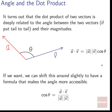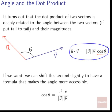If we want, we can rearrange this to make the angle more accessible: cosine theta equals u dot v divided by the length of u times the length of v. Then if we want to find the angle, we take the arc cosine of both sides. I prefer the formula u dot v equals |u| times |v| times cosine theta because it's a little easier to remember.